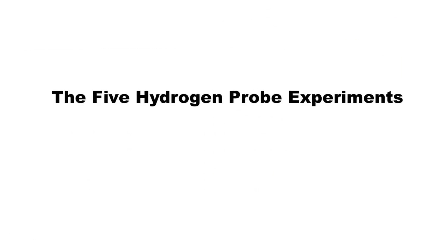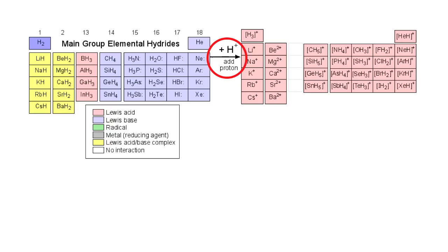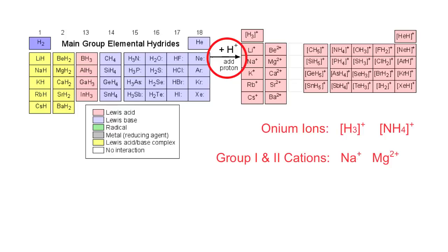The five hydrogen probe experiments. We are now going to add and remove hydrogen species — H+ and H− ions and hydrogen radicals — from the main group elemental hydrides. First, let's add one or more protons. This generates onium ions: H3O+, NH4+ the ammonium ion, and group one and two metal cations such as sodium ion and magnesium ion.